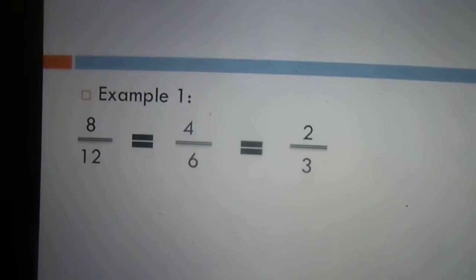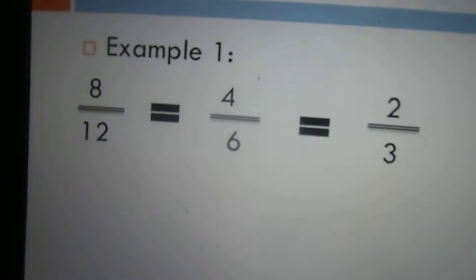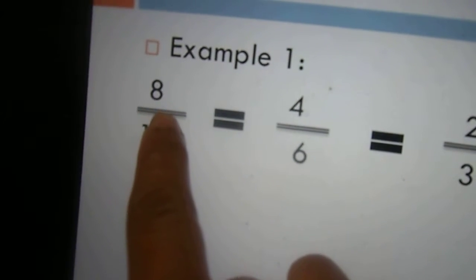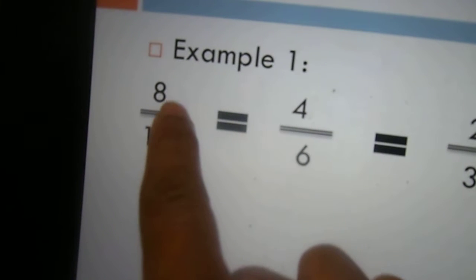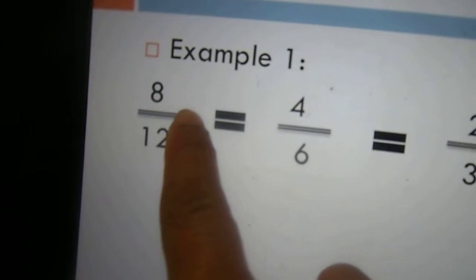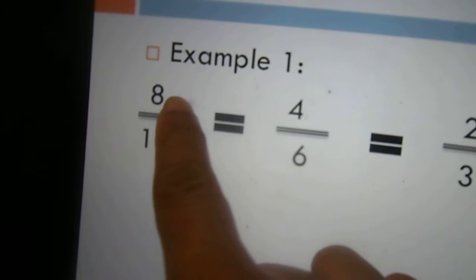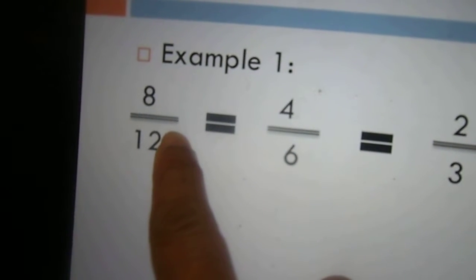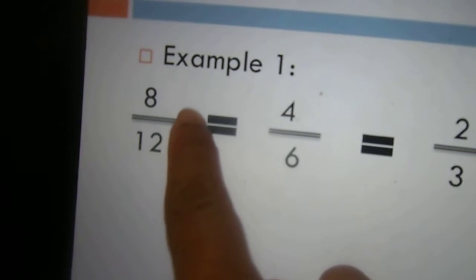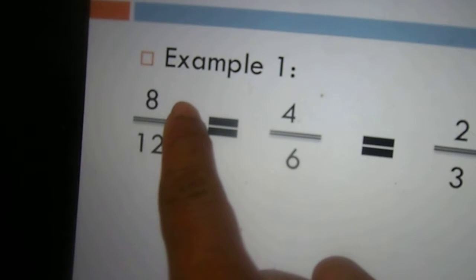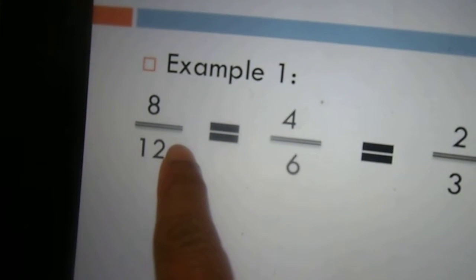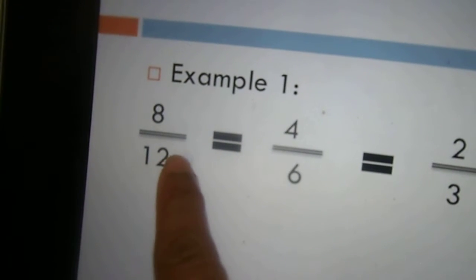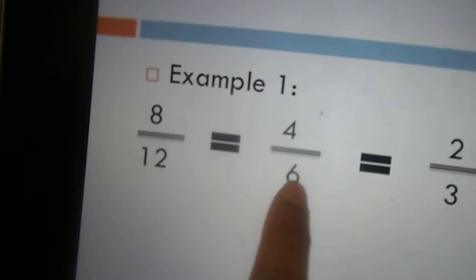Here is an example: 8 over 12. How can we divide this to the simplest form? We look at a number that can divide the top and the bottom. 2 can divide both 8 and 12. When 2 divides 8, it will be 4. When 2 divides 12, it will give us 6.